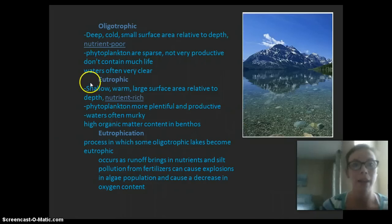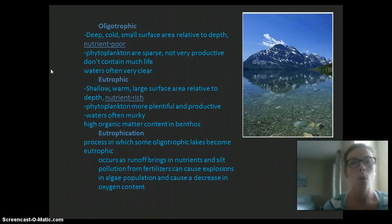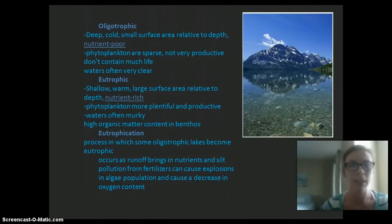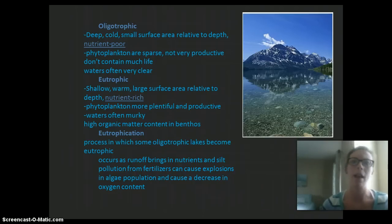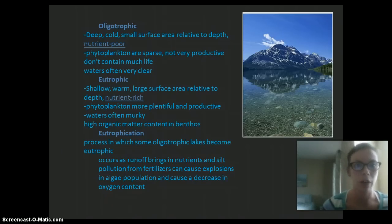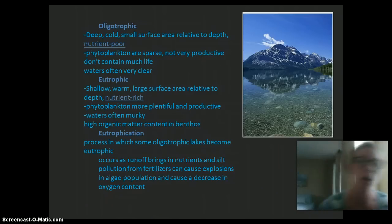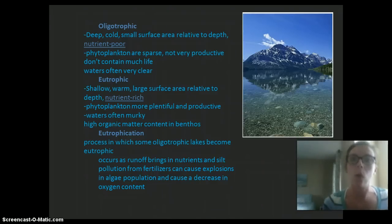Eutrophic lakes are shallow, warm, with a large surface area relative to depth and are very nutrient rich. There's a lot of nutrients which can support a lot of phytoplankton and other forms of life. The water is often murky because of that high nutrient concentration. There is a high amount of organic matter in the benthos because there's a lot of life, and that life dies or produces waste that feeds the organisms living in the benthos.